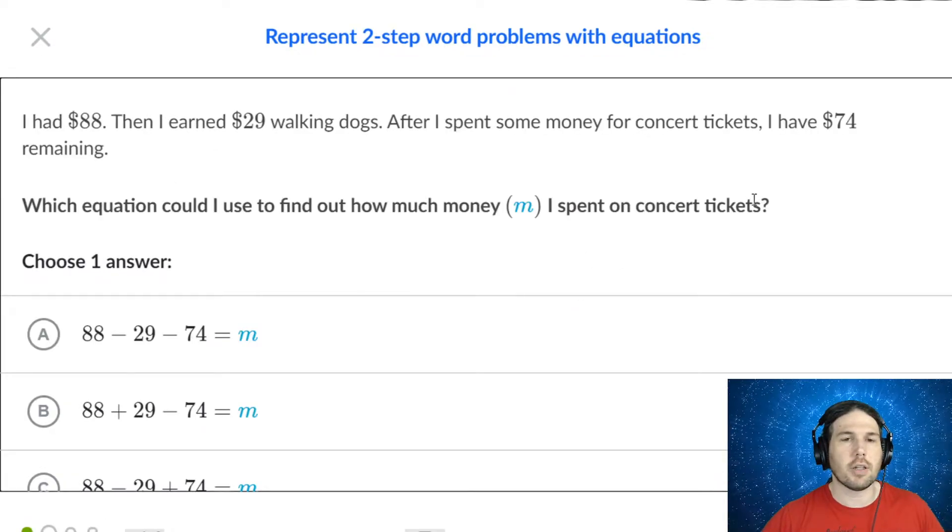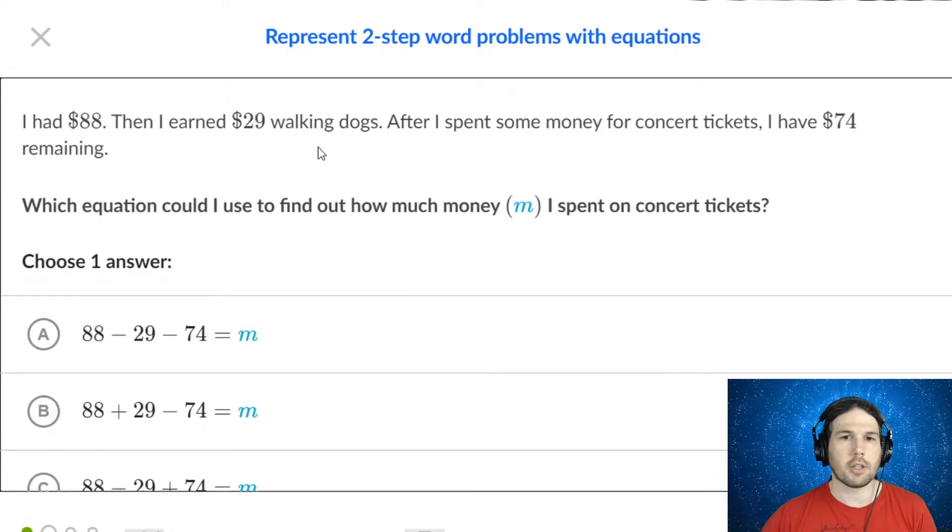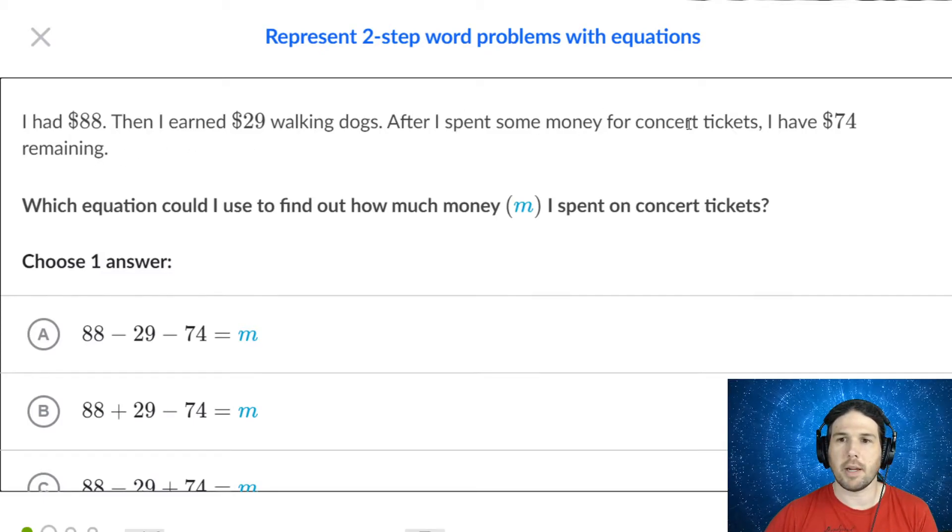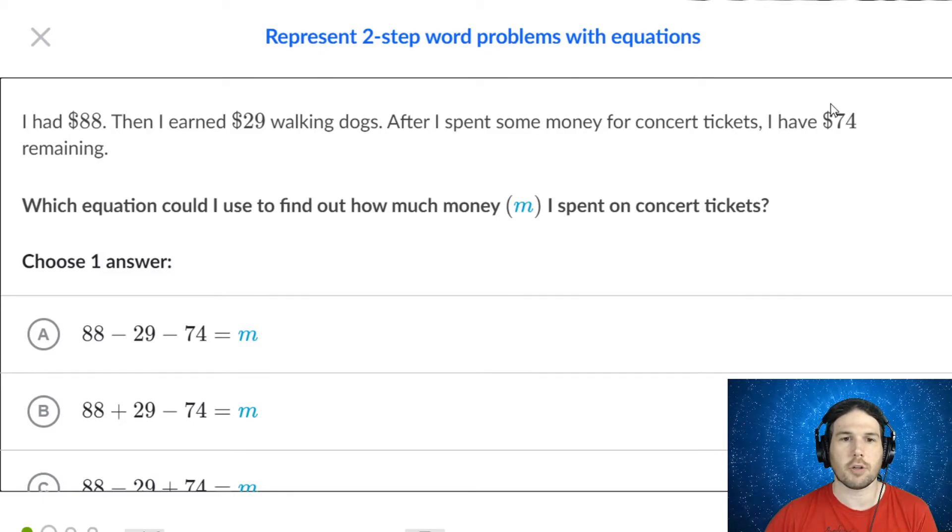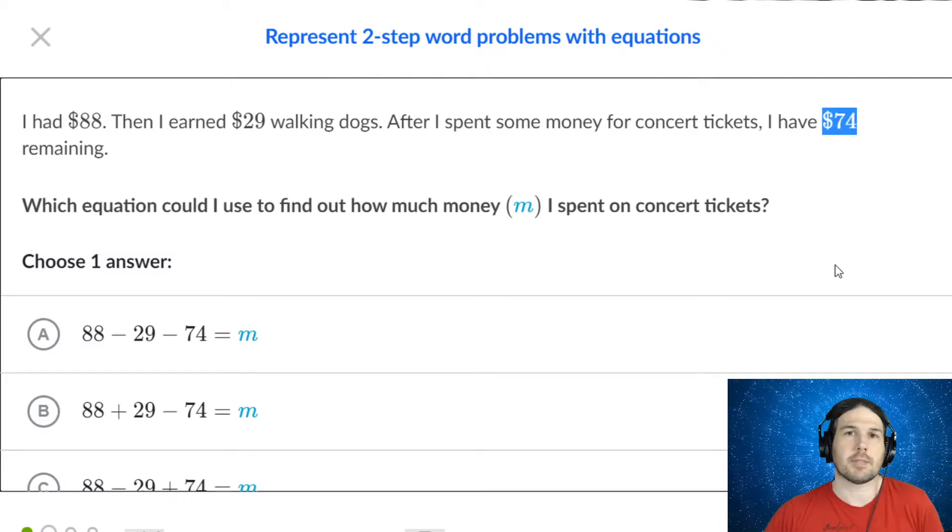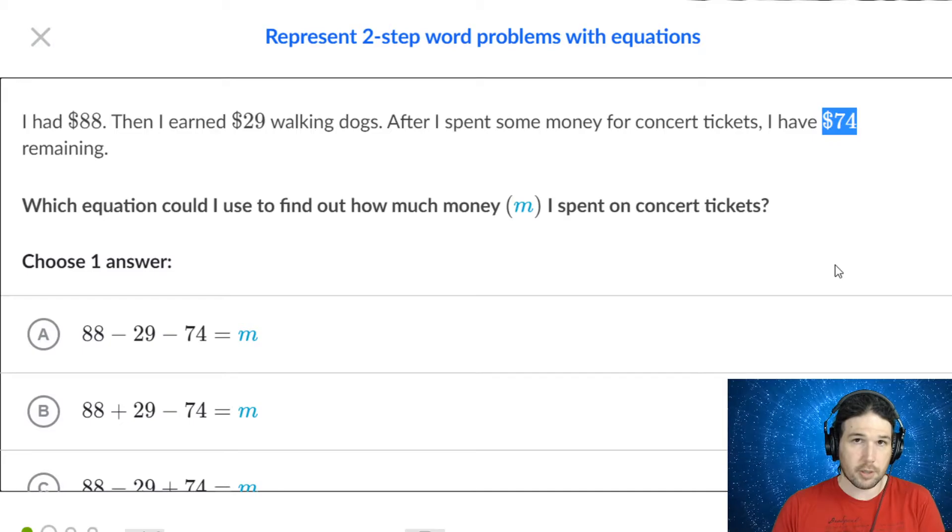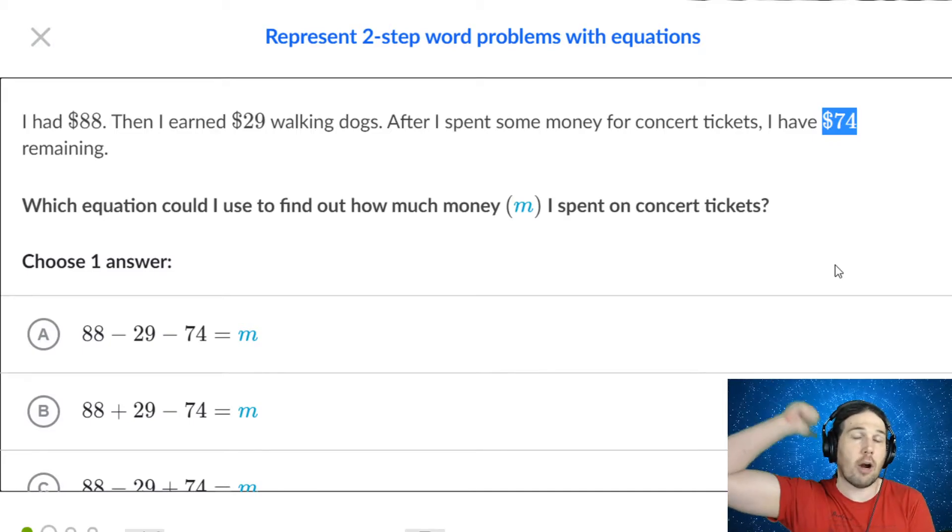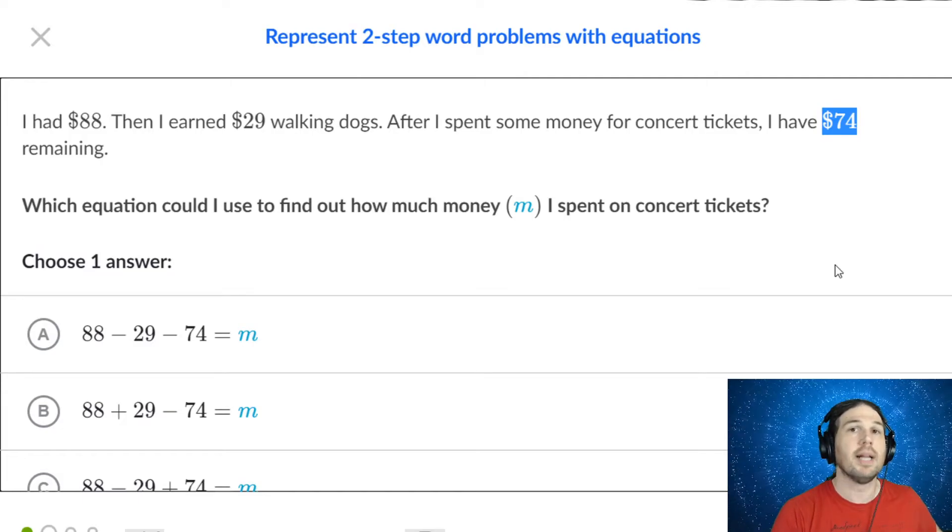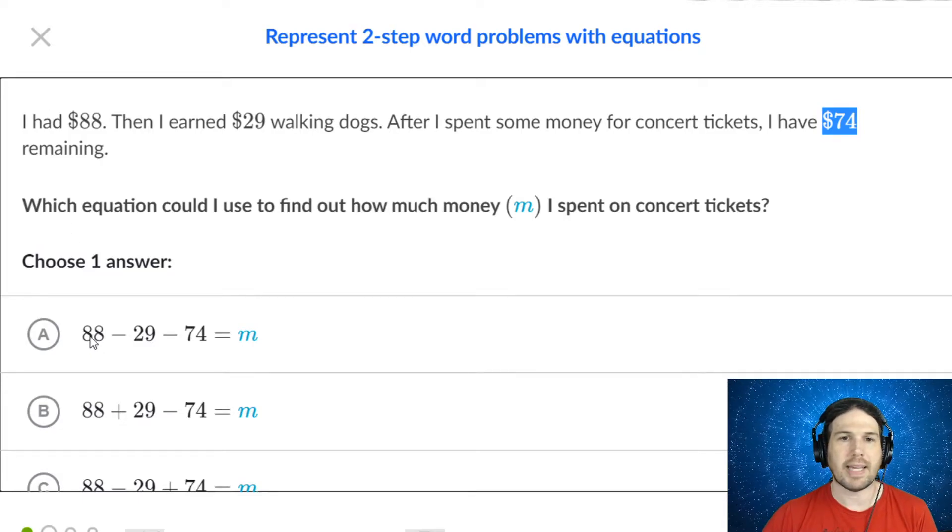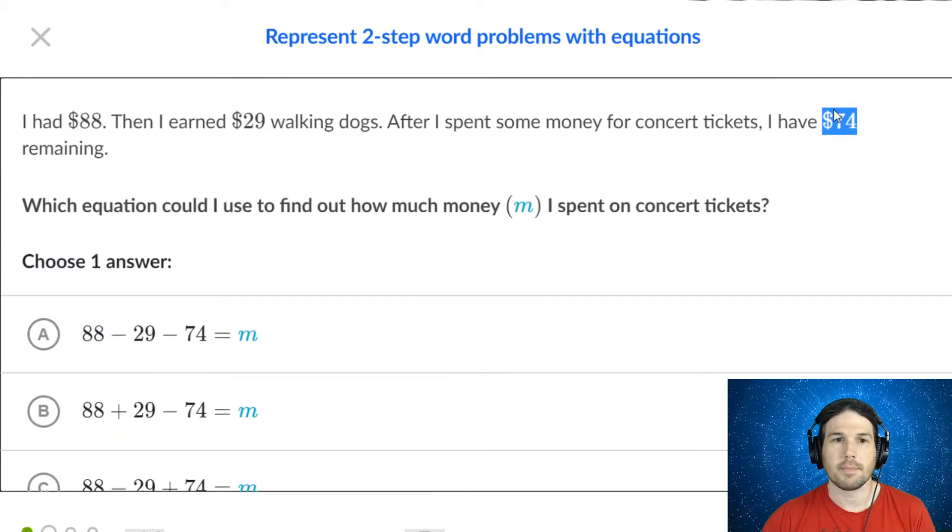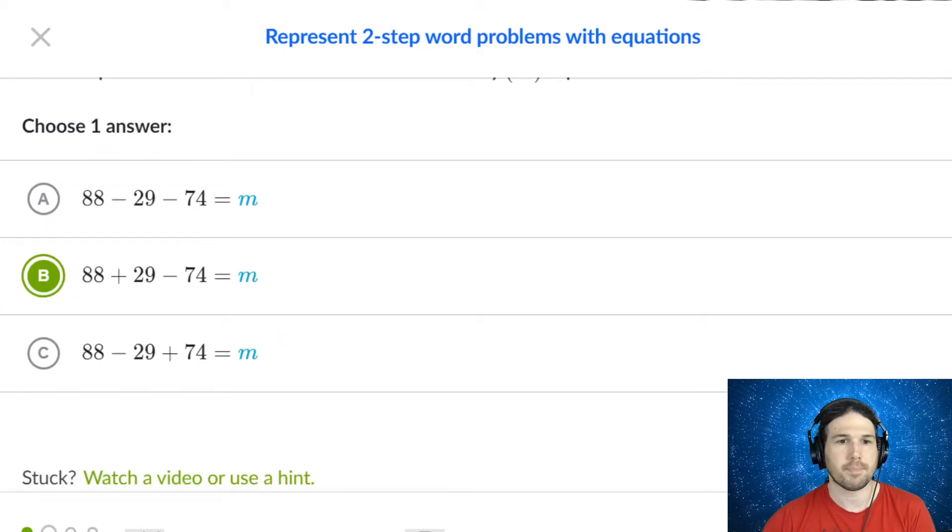I had $88, then I earned $29 by walking dogs. And then I spent some money on concert tickets, and I have $74 remaining. So again, even though $74 is presented to us as the remainder, since we're searching for how much we spent, we're going to subtract the remainder from the total, and that'll tell us how much we spent. So that would be $88 plus $29 minus $74.